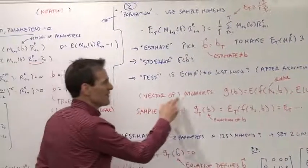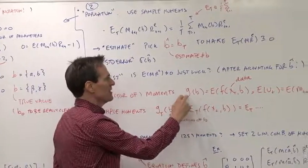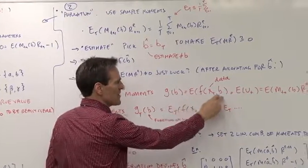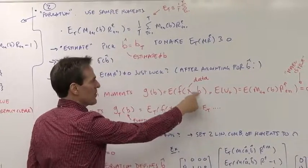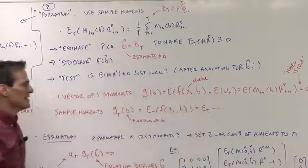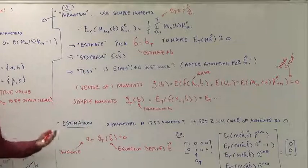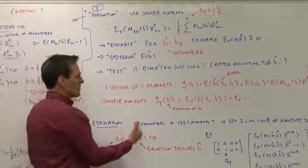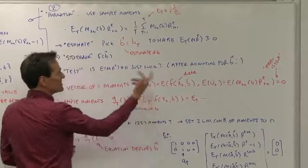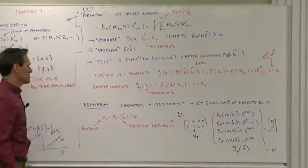Now let's put that into the GMM notation. GMM notation is we have a vector of moments corresponding to the assets we're going to look at. That's called G of B. That's the things that should be zero. We also call them sometimes the true mean of F of X beta. The sample counterparts is G sub capital T. That means the sample mean of the X, the sample mean of M and R. And that is, of course, a function of what parameters we choose to use.